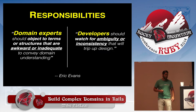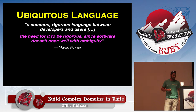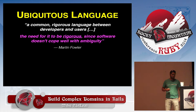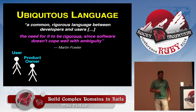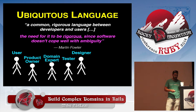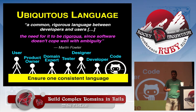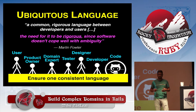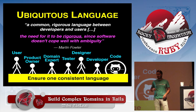So we're defining the ubiquitous language. Martin Fowler describes it best: a common rigorous language between developers and users, with the need for it to be rigorous since software doesn't cope well with ambiguity. From your user, to your product owner, to your domain expert, to your tester, to your developer, to your designer, all the way to your code — you want one consistent language across the board. If you don't do this, you create a fragmented language. All the people in your team start doing translations because they're not using the same language, and more worrisome, your code starts having different fragments of language. If you can't understand your domain and communicate, how are you supposed to build it?